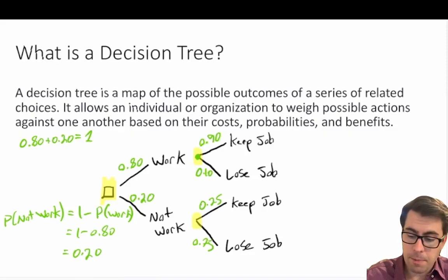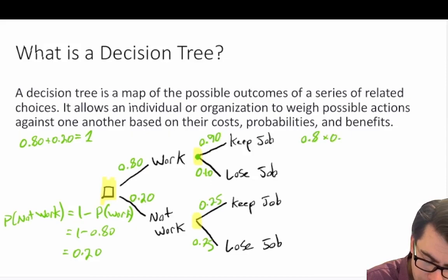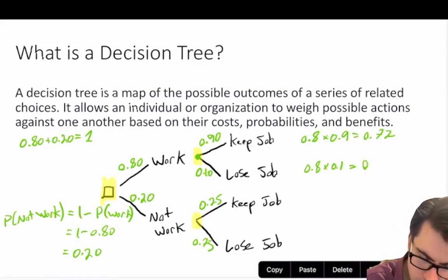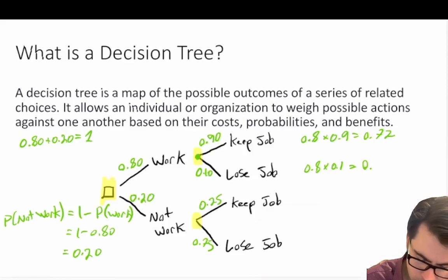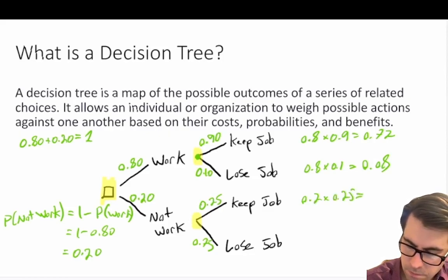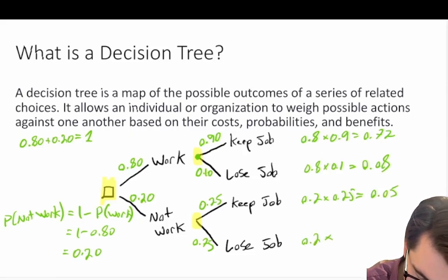So if we want to find out the probability that we keep our job given we went to work, all we do is take the probabilities and multiply across the branches. So 0.8 times 0.9 is 0.72. 0.8 times 0.1 is 0.08. 0.2 times 0.25 is 0.05. And 0.2 times 0.75, which means that 0.2 times 0.75 is equal to 0.15.